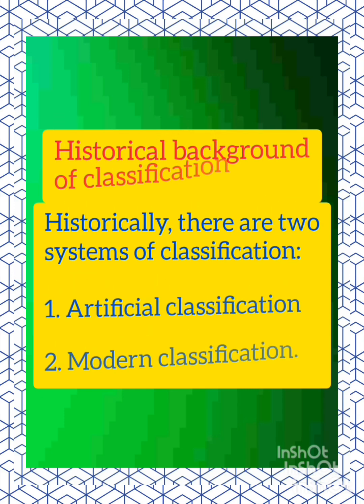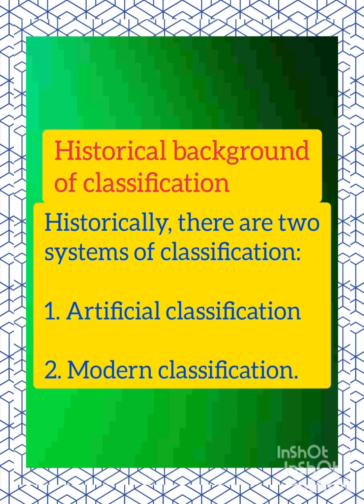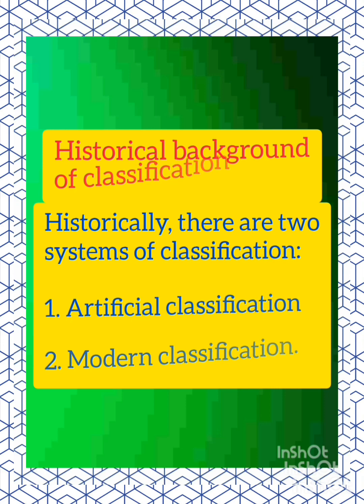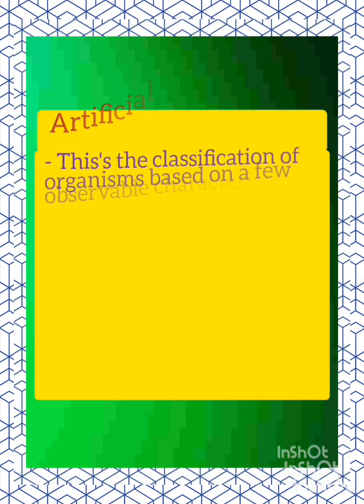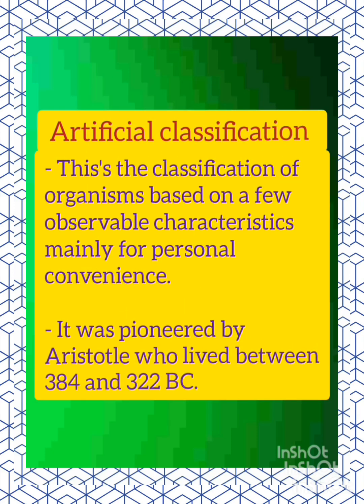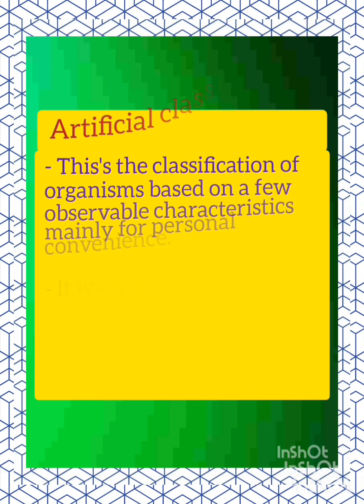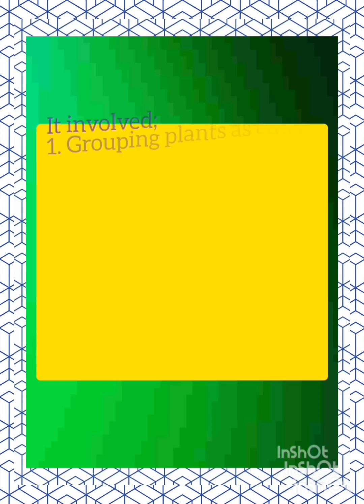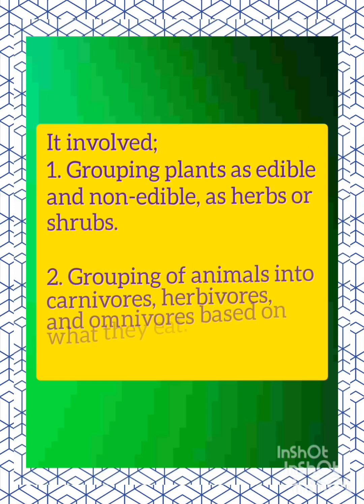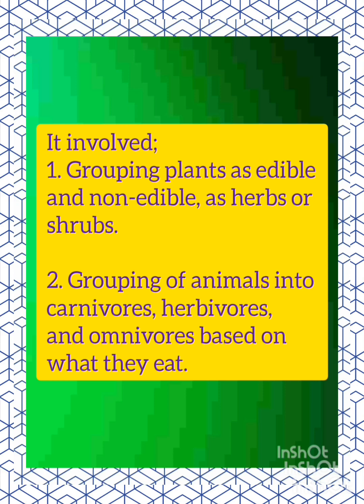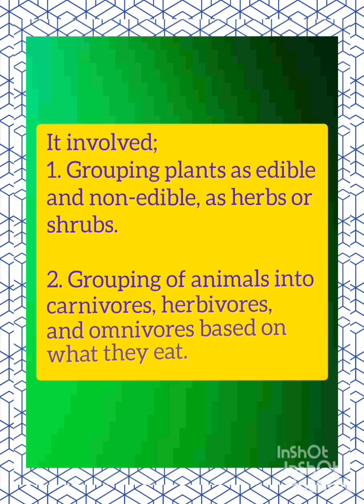The historical background of classification: historically there are two systems of classification — artificial classification and modern classification. Artificial classification is the classification of organisms based on a few observable characteristics, mainly for personal convenience. It was pioneered by Aristotle who lived between 384 and 322 BC. It involved grouping plants as edible and non-edible or as herbs or shrubs, and grouping animals into carnivores, herbivores and omnivores based on what they eat.